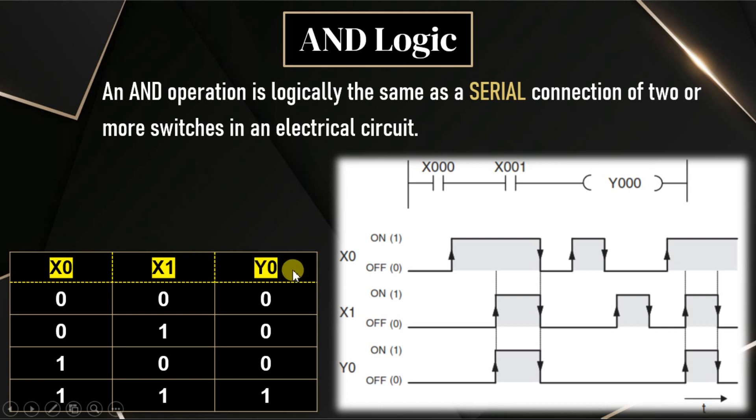The output y0 will be activated when both inputs are active or both inputs are on. If you see my input x0, x1 are 0, 0 and y0 also 0. When input x0 is 0 and input x1 is 1, output y0 is 0. Again, one of the input x0 is 1 and another input x1 is 0, output y0 is 0. When my input x0 is 1 and input x1 is also 1, then only the output y0 becomes 1.